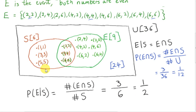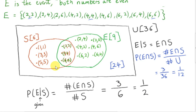Since event S has occurred, we imagine randomly selecting an element from the six elements of set S, which are equally likely. The probability of selecting one of the three elements in the intersection is 3 divided by 6. Event S has occurred, meaning the dice show one of these six outcomes, and we can see that half of these six outcomes have the property that both numbers are even.